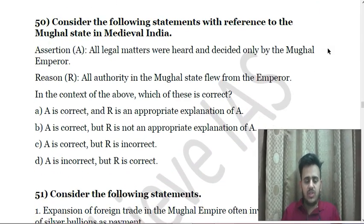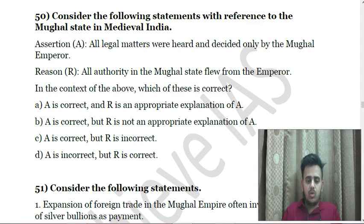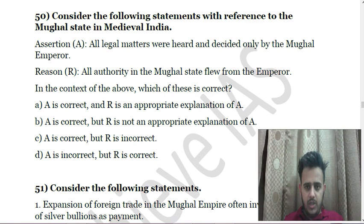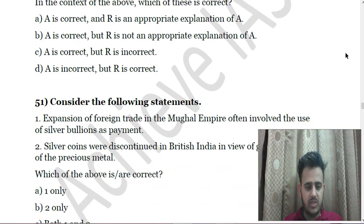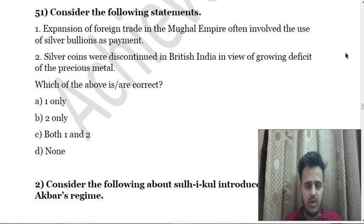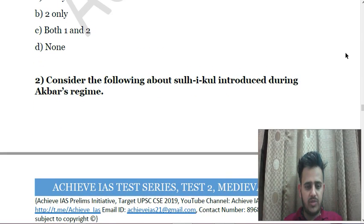Next: Consider the following statements with reference to the Mughal state in medieval India — Assertion: All legal matters were heard and decided only by the Mughal emperor. Reason: All authority in the Mughal state flowed from the emperor. Choose which of the following options is correct. Next: Consider the following — First, expansion of foreign trade in the Mughal empire often involved the use of silver bullion as payment; Second, silver coins were discontinued in British India in view of growing deficit of the precious metal.